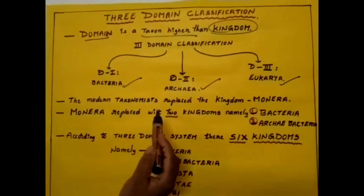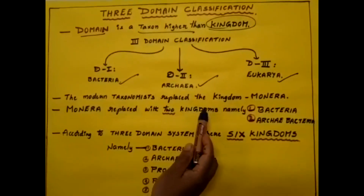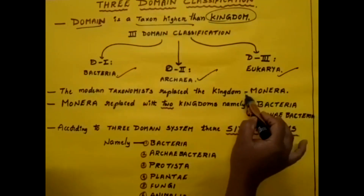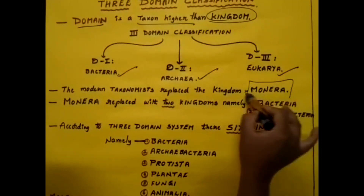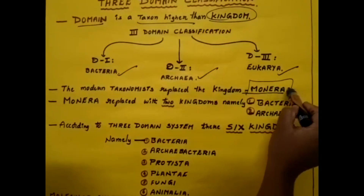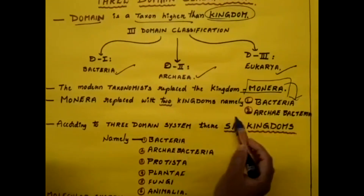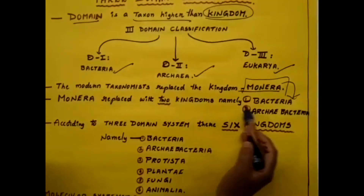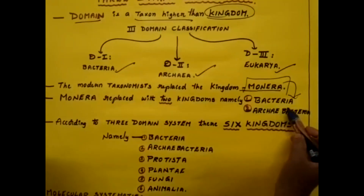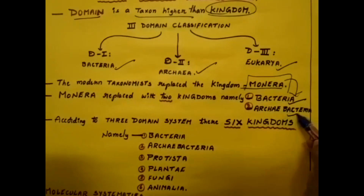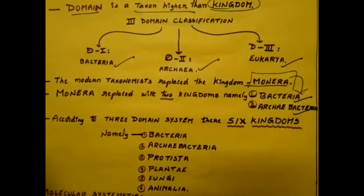The modern taxonomist replaced the kingdom Monera — which is one of the kingdoms — and it is replaced by these two kingdoms: they are called Bacteria and Archaebacteria.